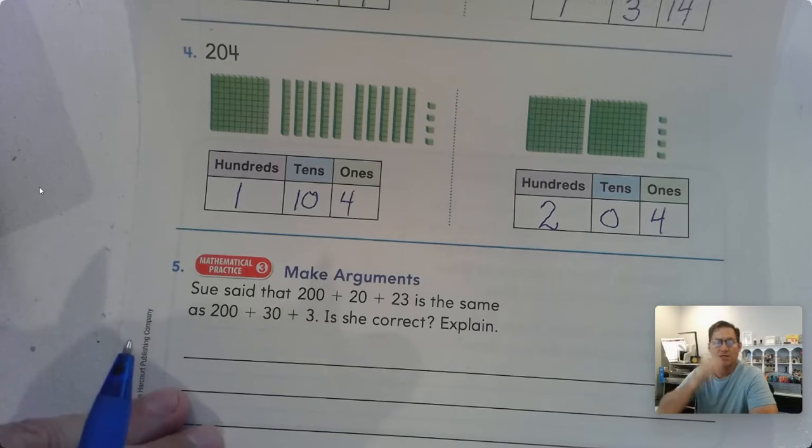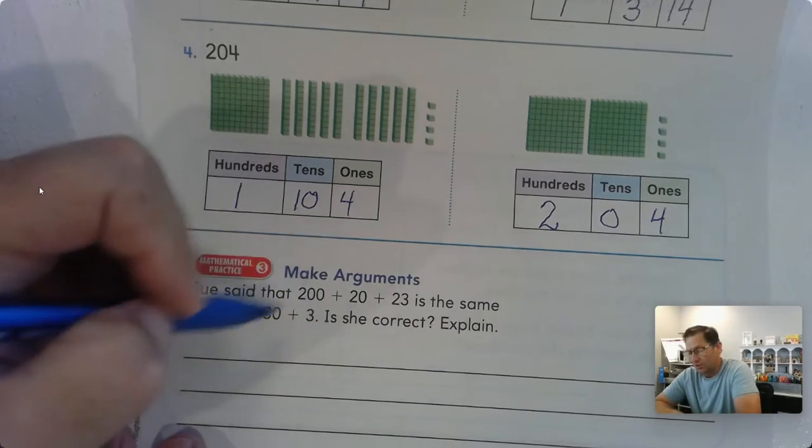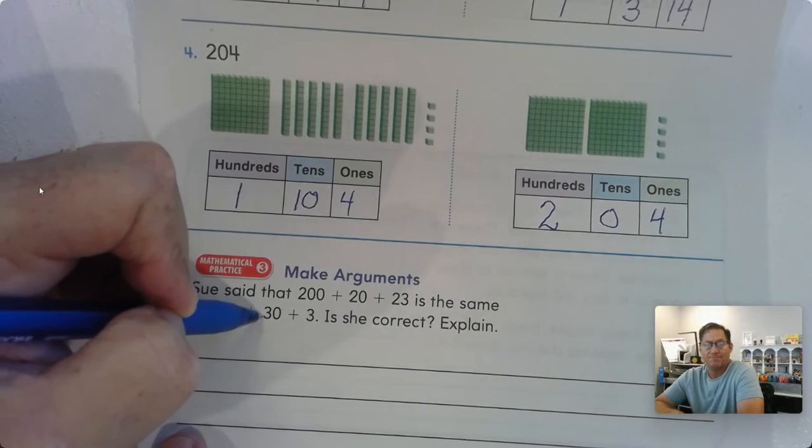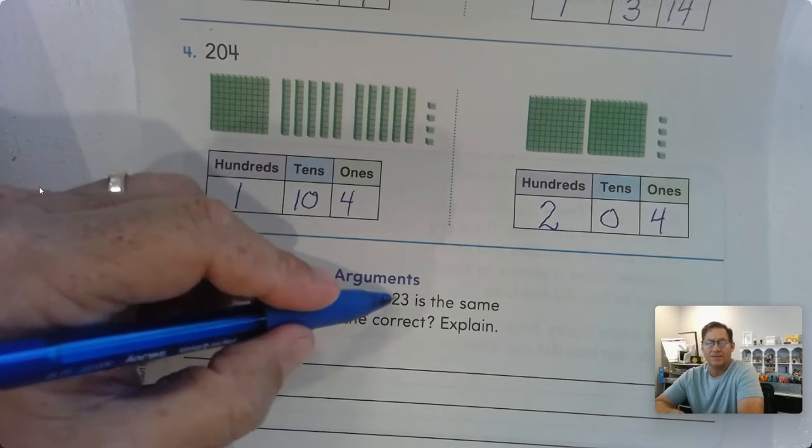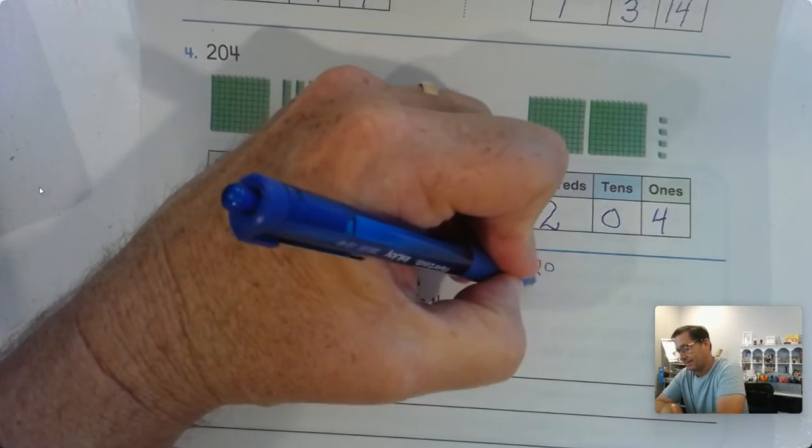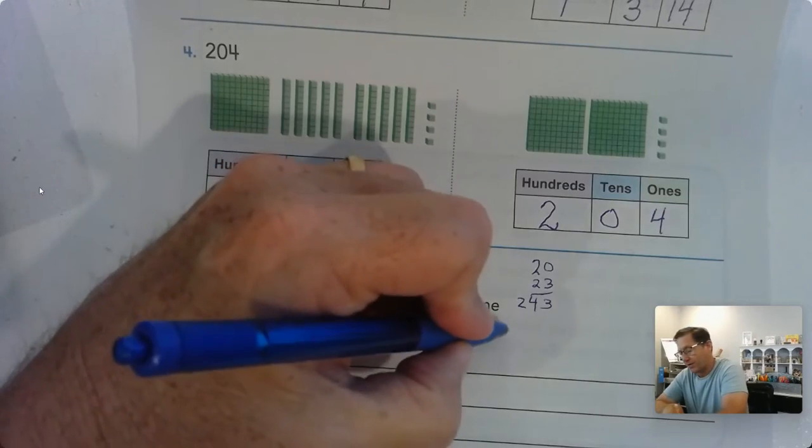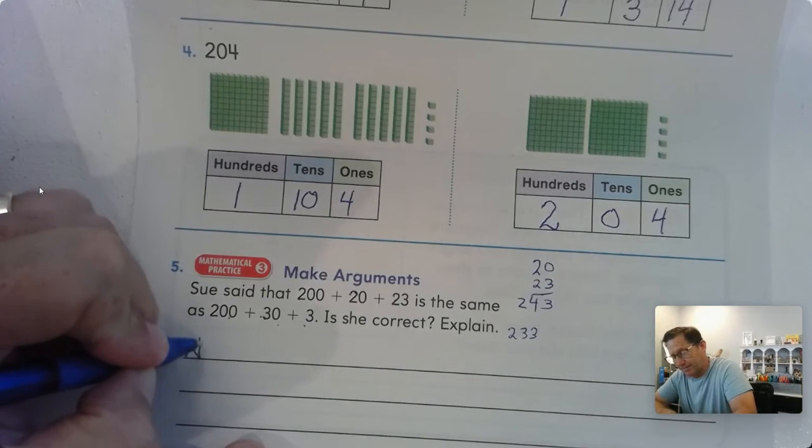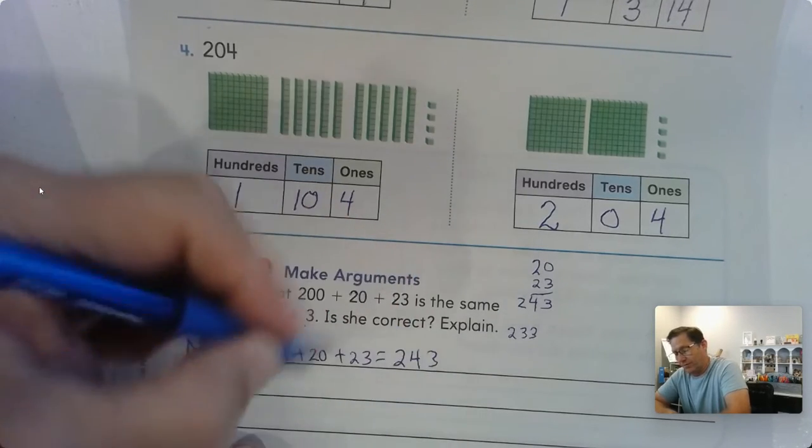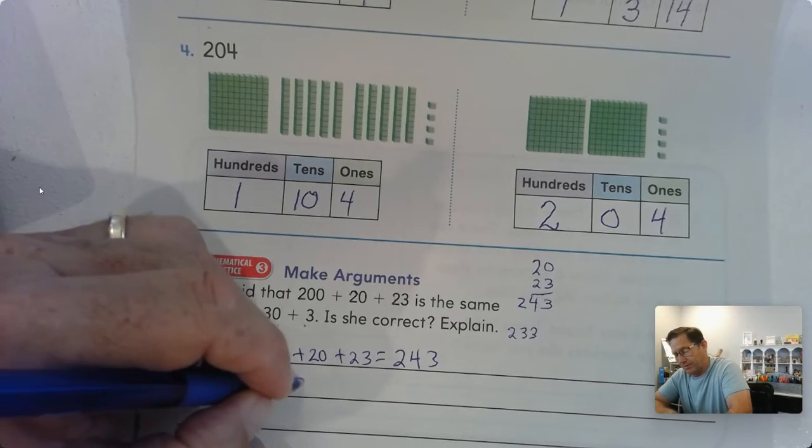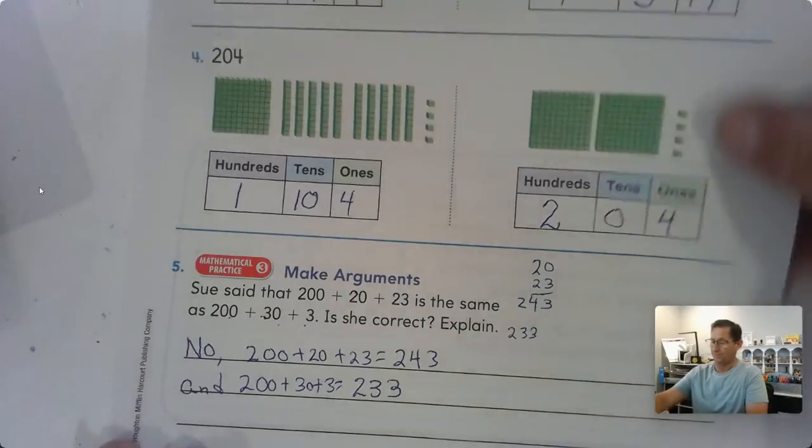Number five. Sue said that 200 plus 20 plus 23 is the same as 200 plus 30 plus 3. Is she right? Well, the 200s are the same, right? 20 and 30. Are those the same? No. This one's ten more, right, than 20. And this one has 23 ones. What is 20 plus 23? 23 ones. So this one is 243. This one is 233. So no, Sue is not correct. 200 plus 20 plus 23 equals 243. So they're not the same values.